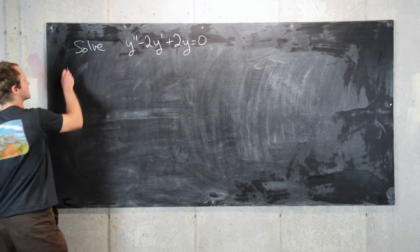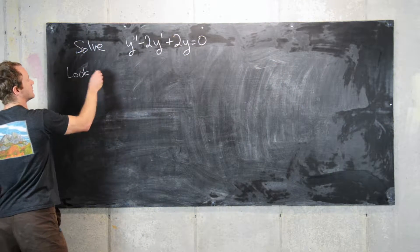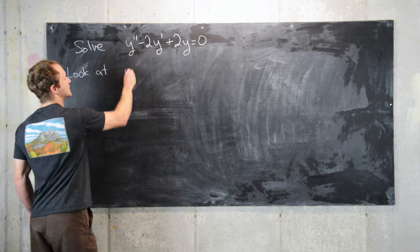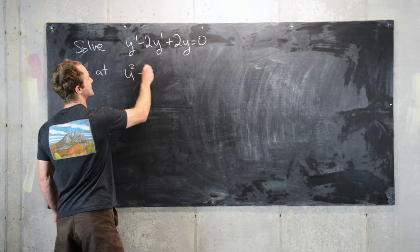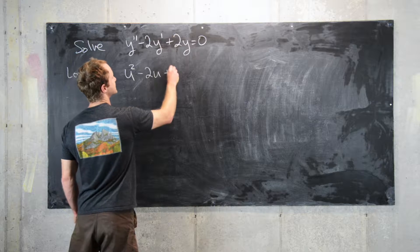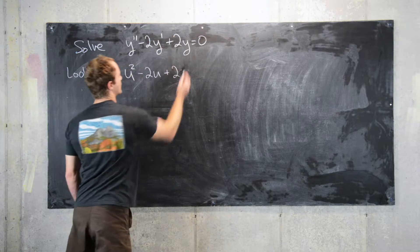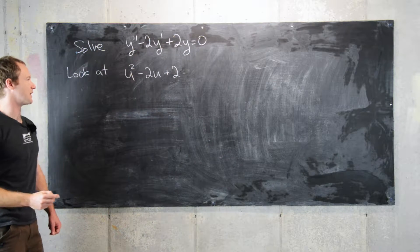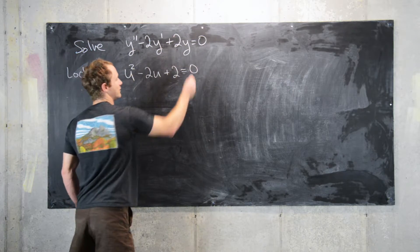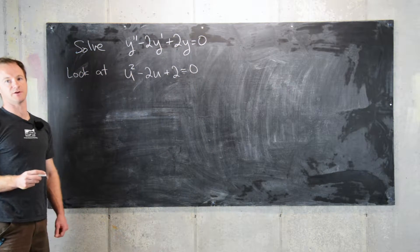So let's consider the following polynomial. So we'll look at u squared minus 2u plus 2, and then we want to find the roots of this polynomial. So in other words, we want to set this equal to 0 and solve for u.